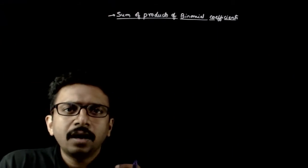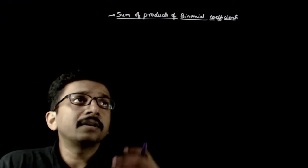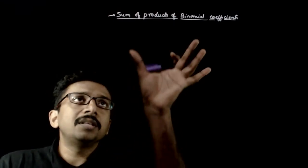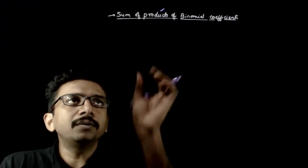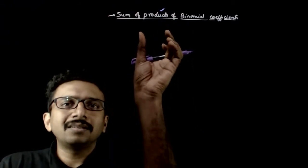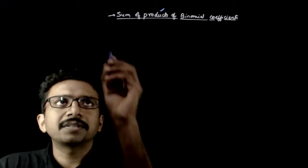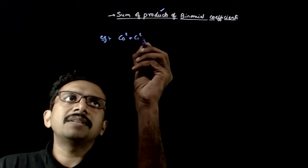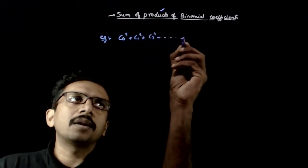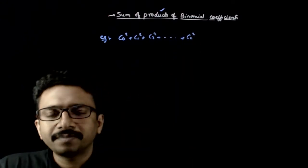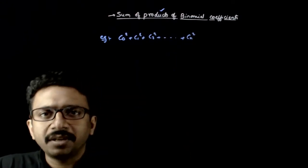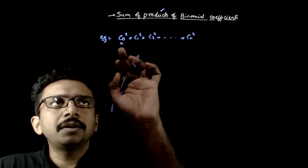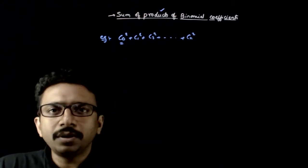Till now we have seen how to do sum of sequences which involves single binomial coefficients. In this topic, we will try to see how to sum sequences containing products of binomial coefficients. For example, if I ask you to find C₀² + C₁² + C₂² + ... + Cₙ², this cannot be done using the previous theory because each term is a product of two binomial coefficients: C₀·C₀, C₁·C₁, C₂·C₂, and so on.